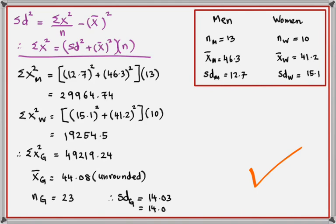In the first video we covered basics — raw data and frequency distribution. In the second video we introduced new formulas for standard deviation and used them for summarized data. We did questions where everything was given, questions like the Red Street Garage and the men and women question where you had to calculate Σx² yourself, and questions where a person left the group. These are the different types of questions on mean, standard deviation, and variance that appear in the Statistics S1 exam.